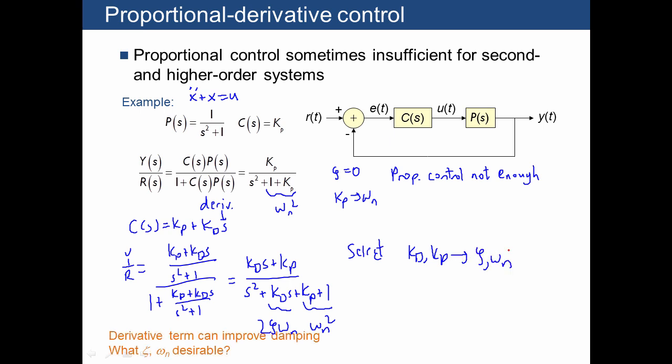The next question is, if we can use the derivative term to improve the damping, what values of zeta and omega n are actually desirable to get good performance for our system?